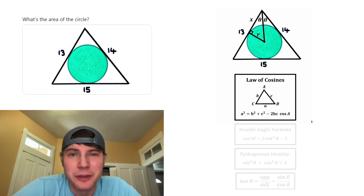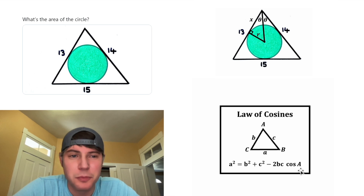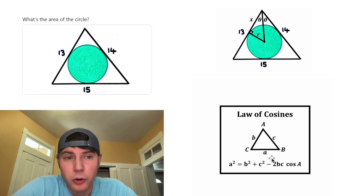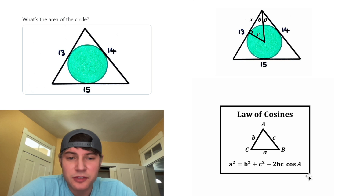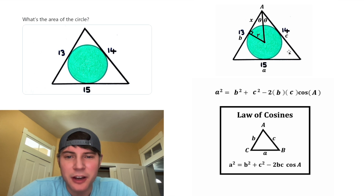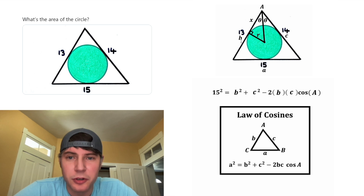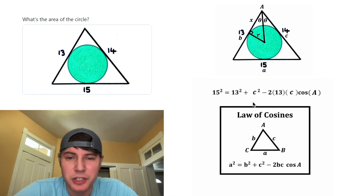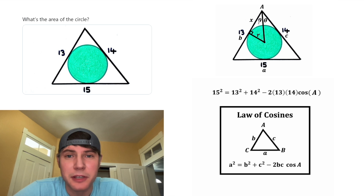We'll use the law of cosines. Any triangle will have this property: if you have a side length lowercase a and the angle opposite of it capital A, and the same for B and C, this formula will always be true. In this triangle, if we call this side A and this angle capital A, and these two sides B and C, we can use this formula. Lowercase a is 15, lowercase b is 13, lowercase c is 14, and angle A is two theta.